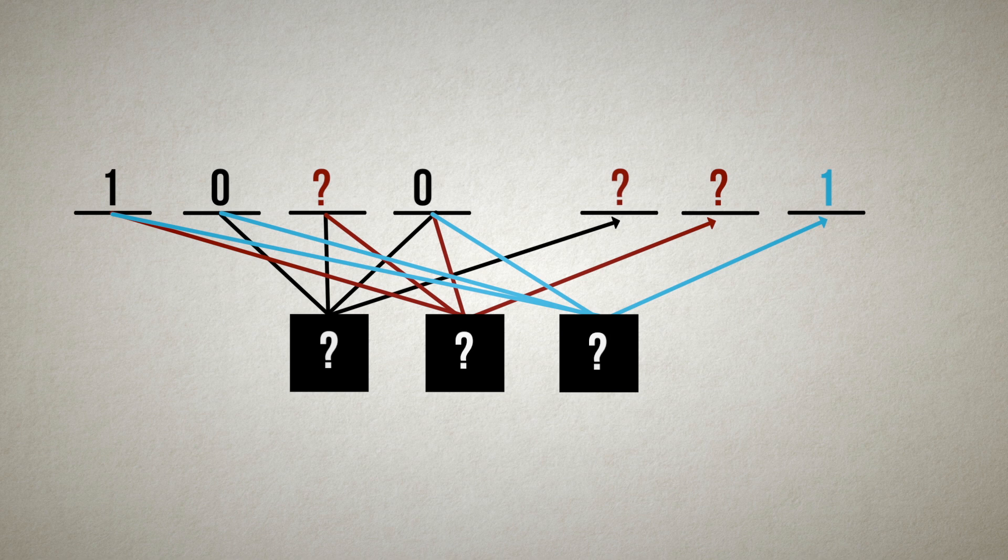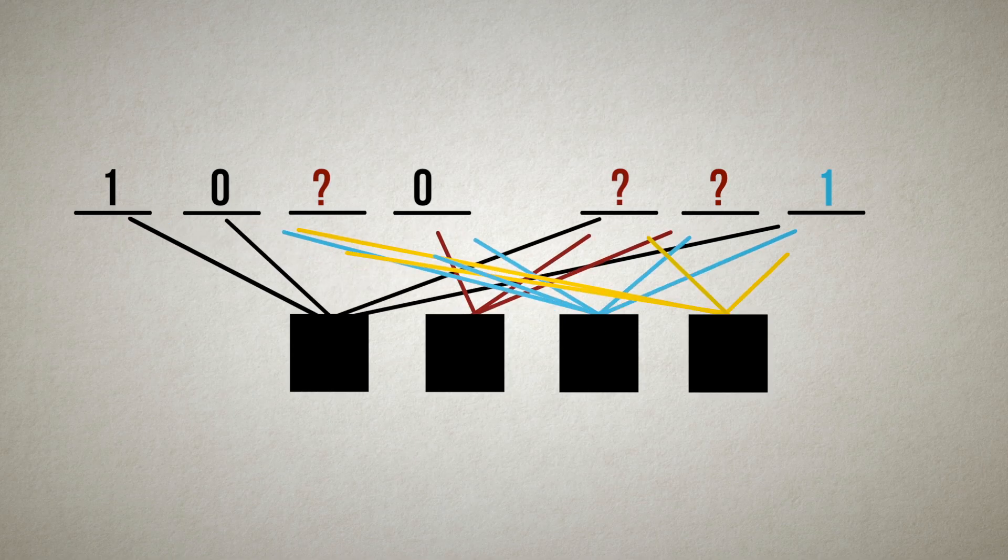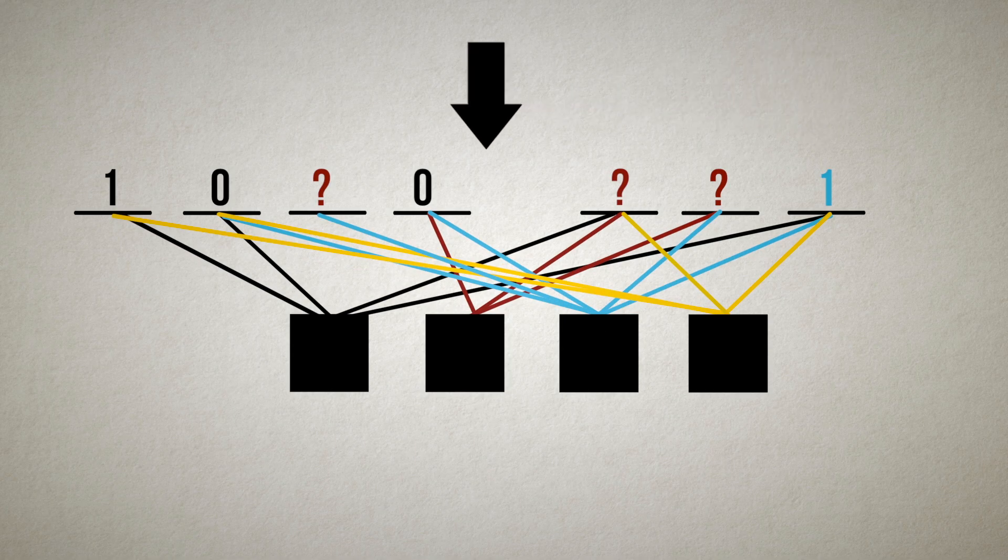The solution to this dilemma is to instead view things in a more general way and protect the parity bits and the message bits equally.